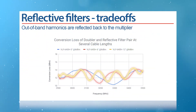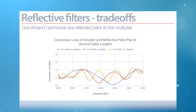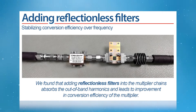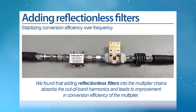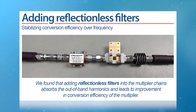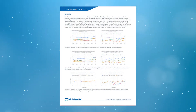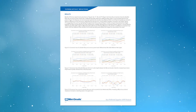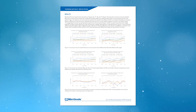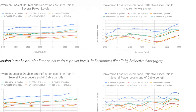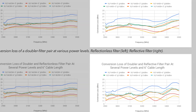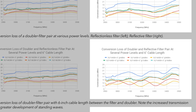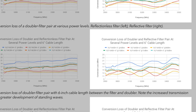This is more noticeable the longer the multiplier chain gets. We experimented with reflectionless filters in the multiplier chains and found that absorbing the out-of-band harmonics leads to improvement in conversion efficiency. The results show this comparison with different input power levels and different electrical lengths between a multiplier and a filter. We already see ripples in conversion loss even without significant length of adapter or cable between the multiplier and filter.